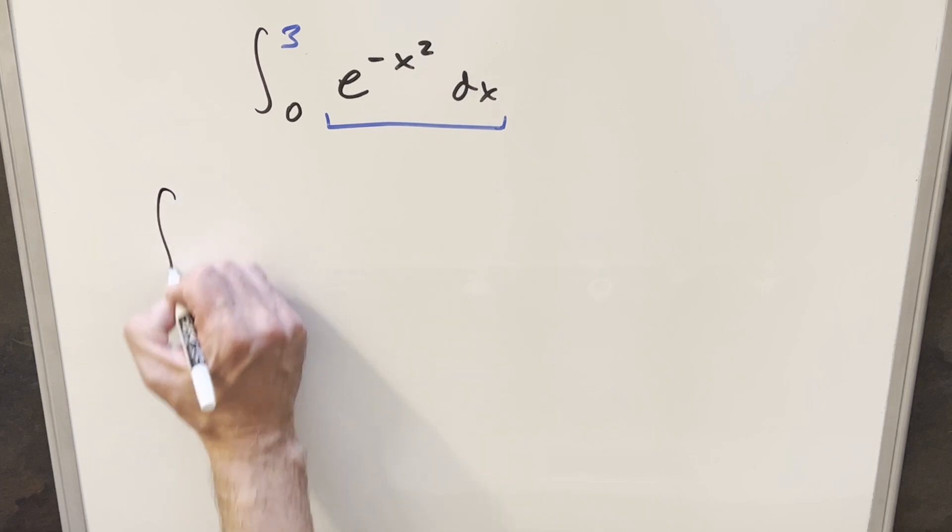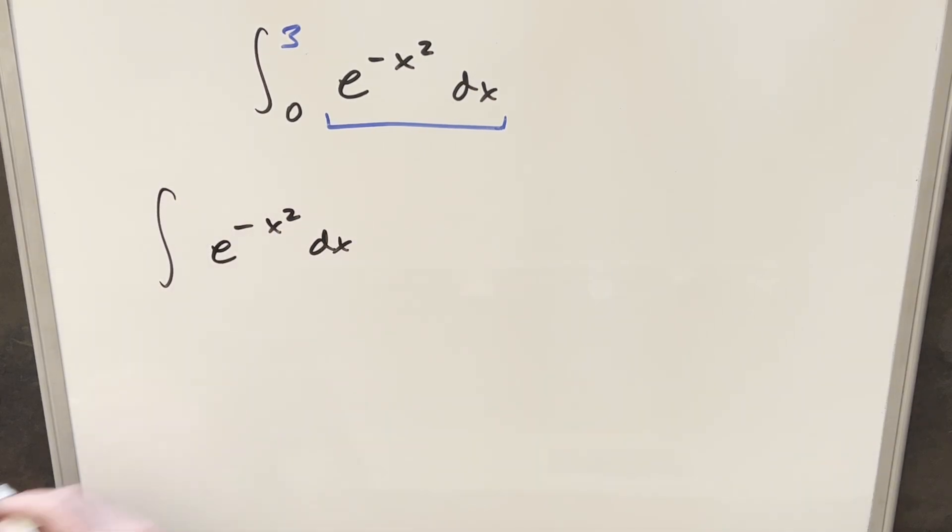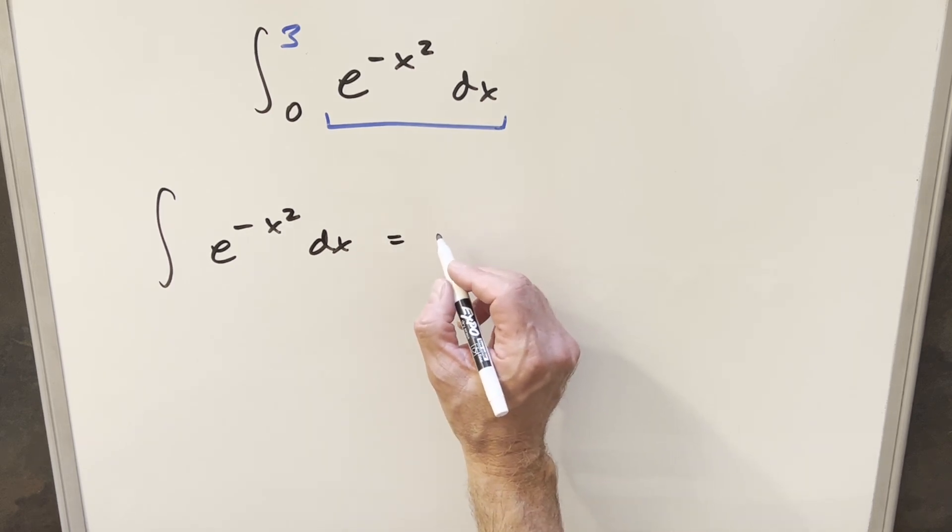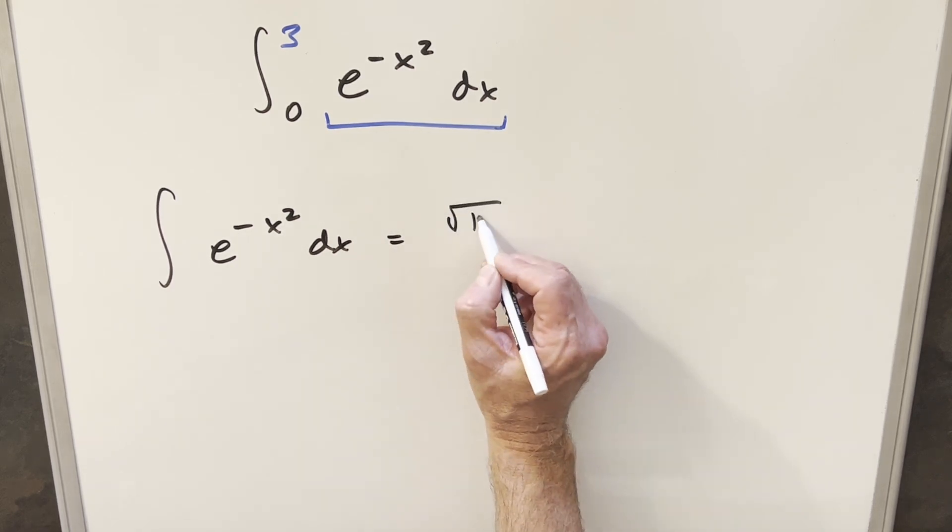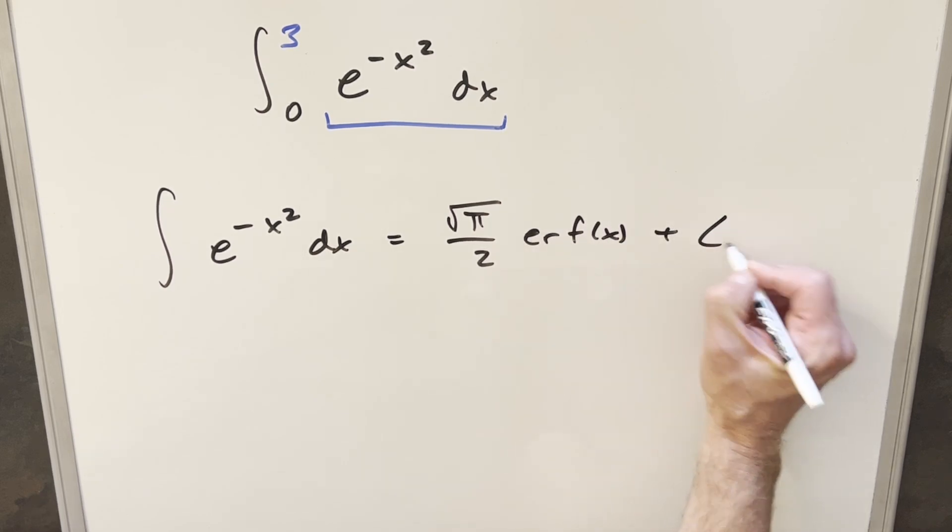And the other problem we have is if you look at the indefinite integral of e minus x squared dx, there's no solution for this in terms of elementary functions. So the way we actually express this is going to be square root of pi over 2 times the error function of x plus c.